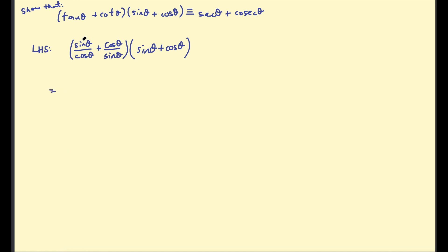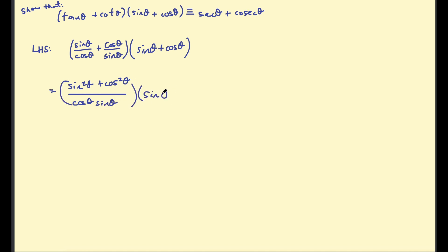Next, combine those fractions by cross-multiplying. The numerator becomes sin²θ + cos²θ, and the denominator is cosine θ · sine θ. This is still multiplied by the second bracket (sin θ + cos θ). The numerator sin²θ + cos²θ instantly simplifies to 1, so we have 1 over (cos θ · sin θ) multiplied by the second bracket.